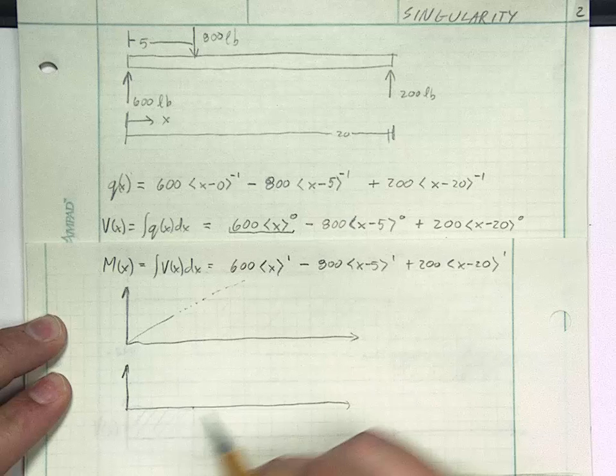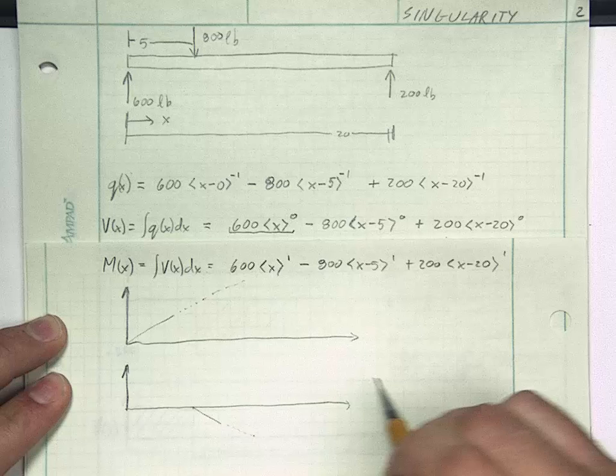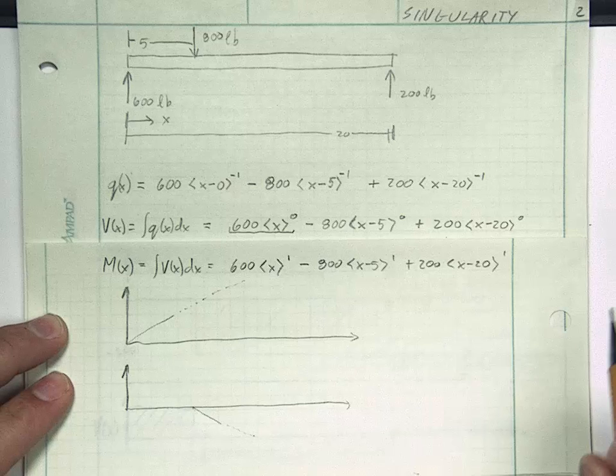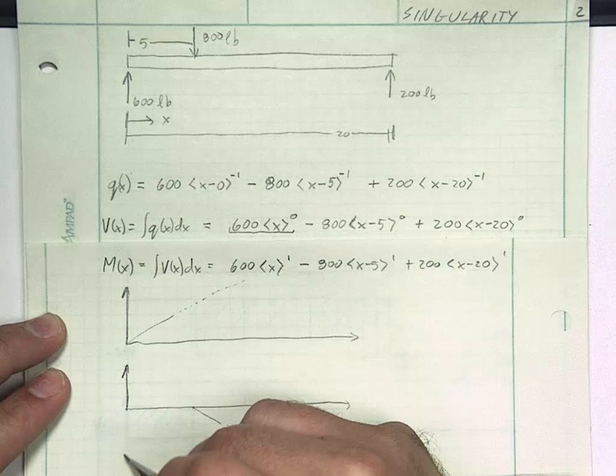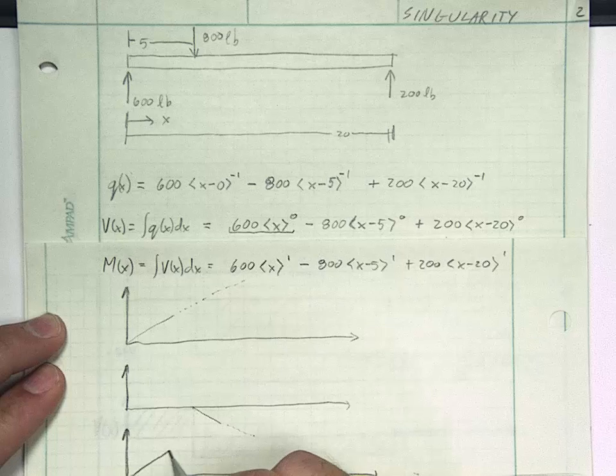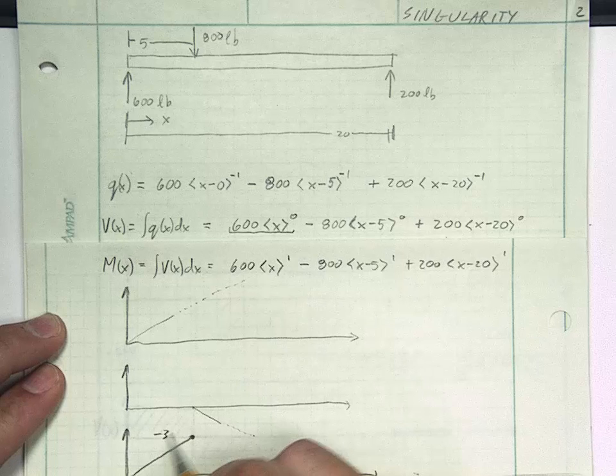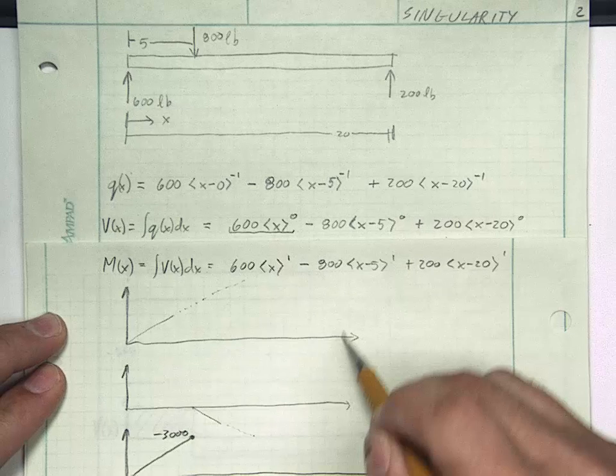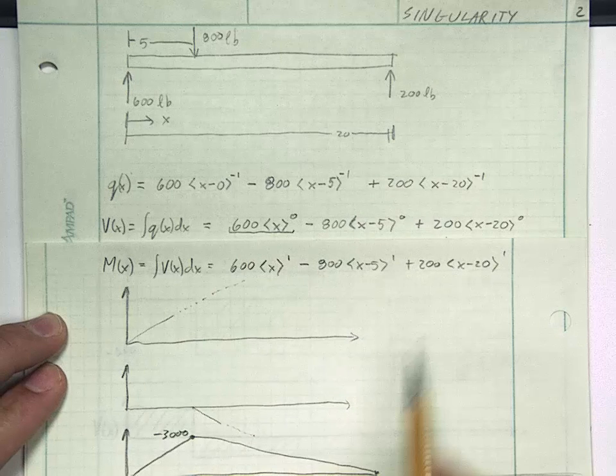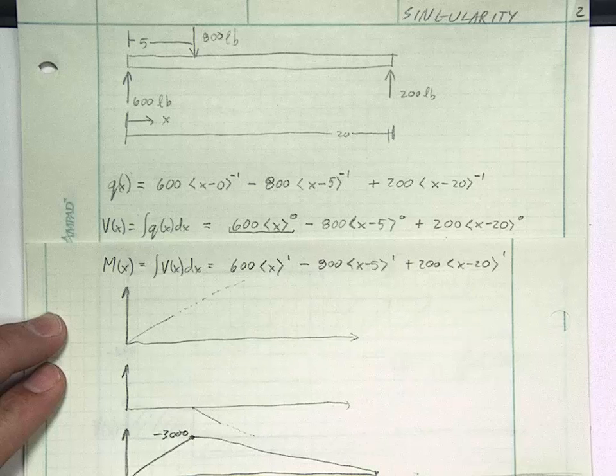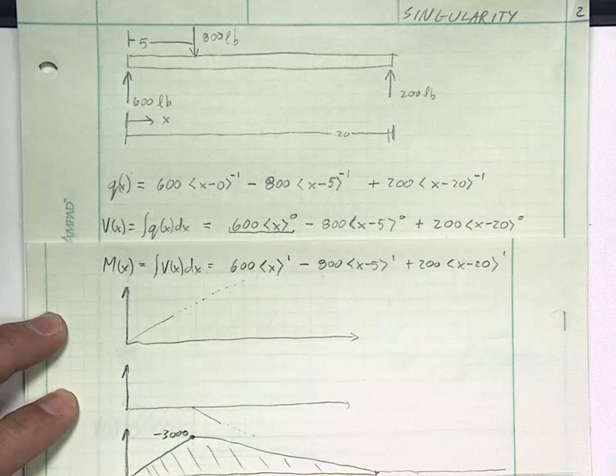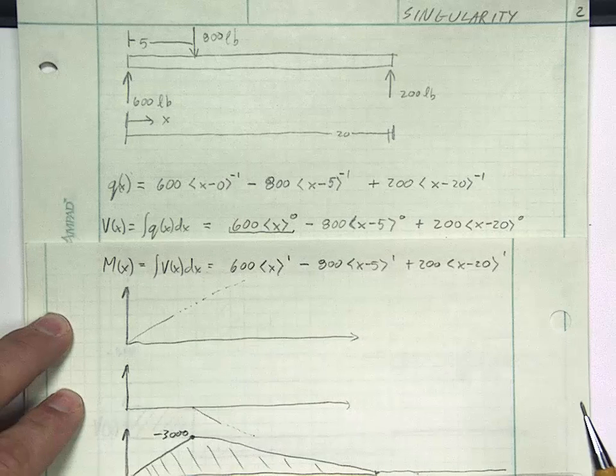The third one again turns on at 20 but it's not really going to affect anything until after we're finished. If we were to superimpose these on top of each other we will get exactly what we calculated last time, which was up until 5. It increases until it gets to 3,000 right there at the top. And then we decrease all the way until, here's the 20 mark, we get to 20. And then that third one would have turned on to cancel how it's continuing to decrease and so it would stay flat from there on out. So my singularity functions achieved exactly what the analysis looking at free body diagrams achieved.